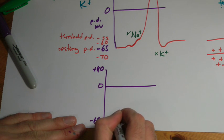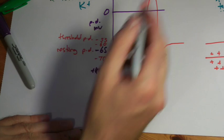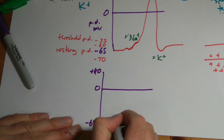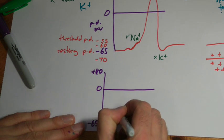So here we're at the resting potential. This is sometimes referred to as a generator potential. Any that's been generated from the receptor cells. We've reached the threshold potential. And this is the point where the cell depolarizes.